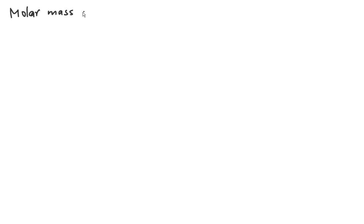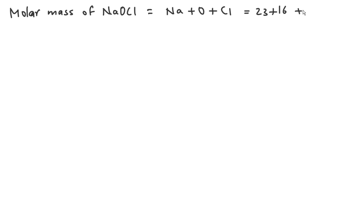First of all, molar mass of NaOCl: that is the atomic mass of sodium plus atomic mass of oxygen plus atomic mass of chlorine, so that is 23 plus 16 plus 35.5, which will be equal to 74.5 gram per mole.